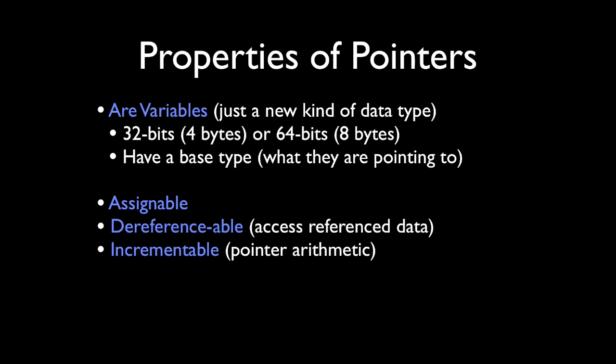So to recap the last video, just some quick properties of pointers. If you haven't seen the last video you should definitely watch it before trying to watch this one. Pointers reference or point to other blocks of data or data types. They are assignable, meaning you can assign them many times to point to anything you want. They're dereferenceable, meaning you can access the referenced data, and they're incrementable, meaning you can use pointer arithmetic to offset the pointer forwards or backwards from its initial memory address location.